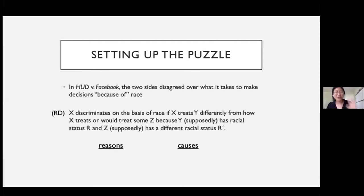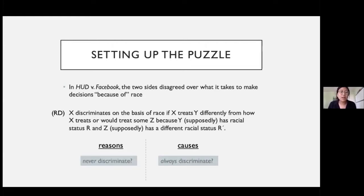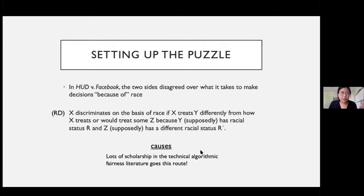The tough cases are when the race feature is not in the algorithm and there are no covert intentions. For these cases, the reasons versus causes framing exposes a deep fault line. Go with the reasons view, and it would seem that algorithms never discriminate on the basis of race, so long as they don't have the race feature. But if you go with the causes interpretation, it looks like — at least if the machine learning system is working properly — they almost necessarily discriminate on the basis of race, since race affects so many aspects of our lives. Scholarship on algorithmic discrimination has overwhelmingly advanced a version of this causal interpretation, and I want to say why I find these accounts lacking.